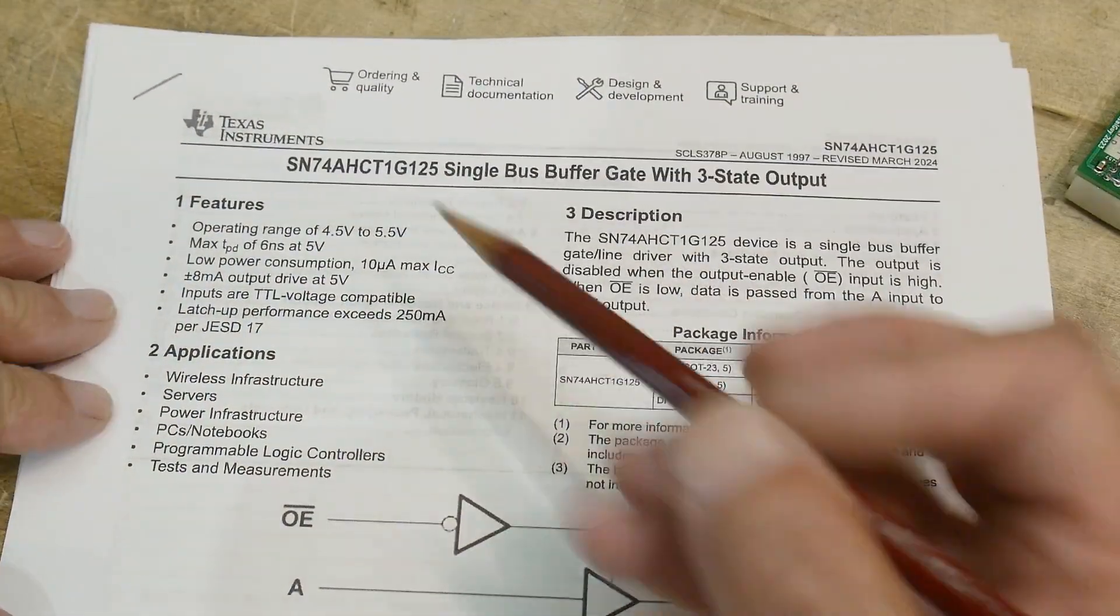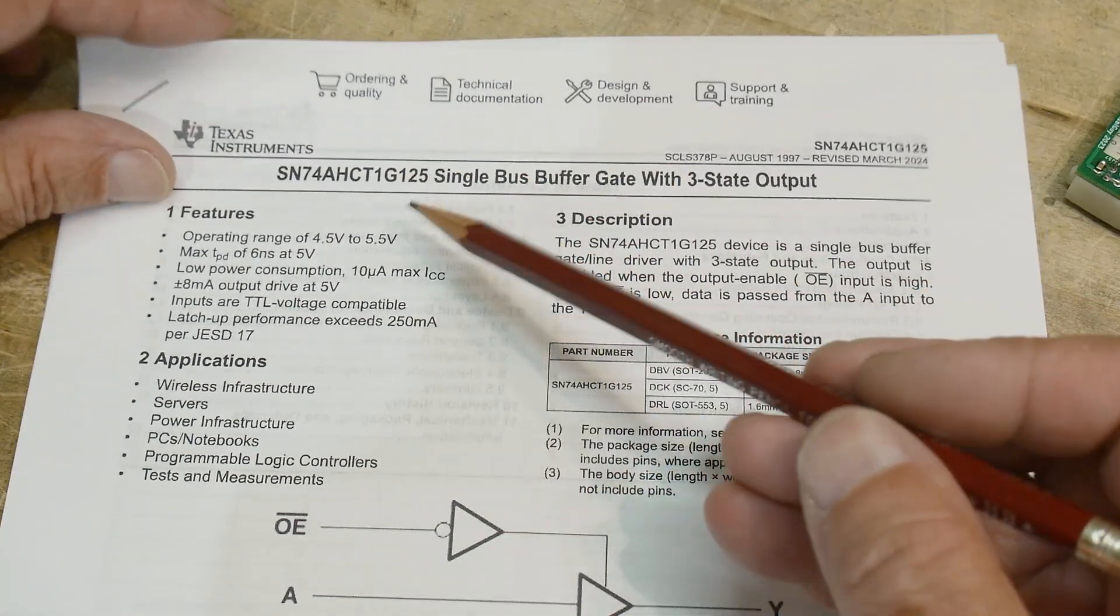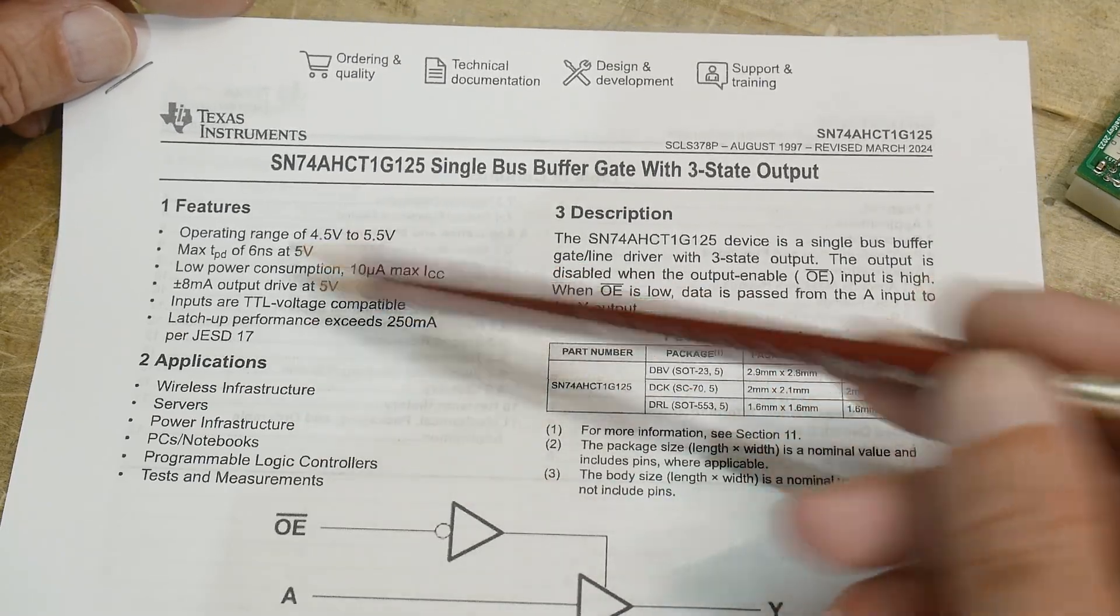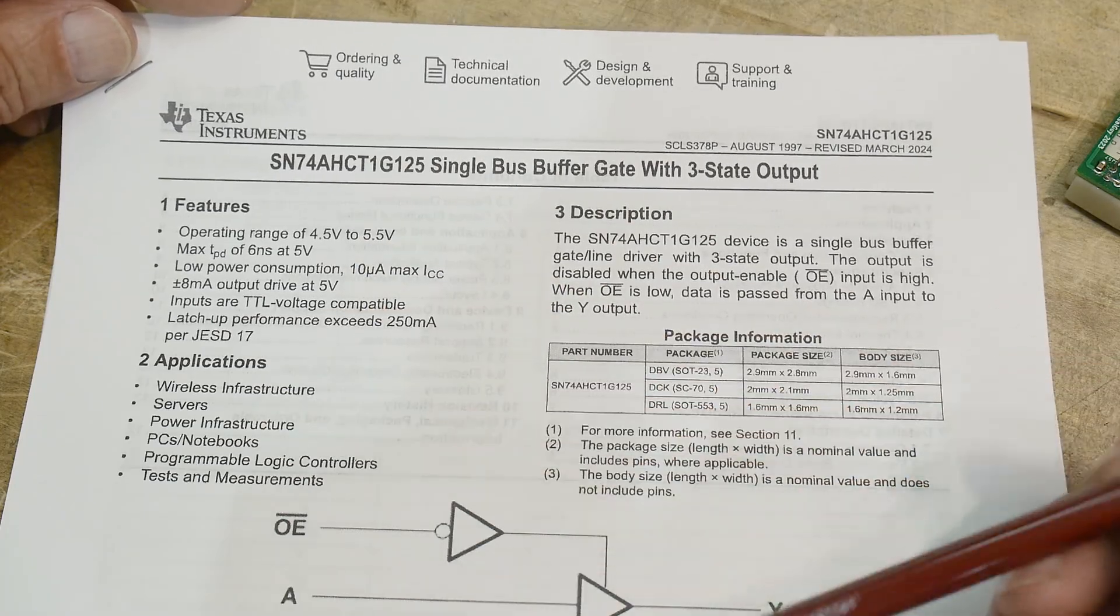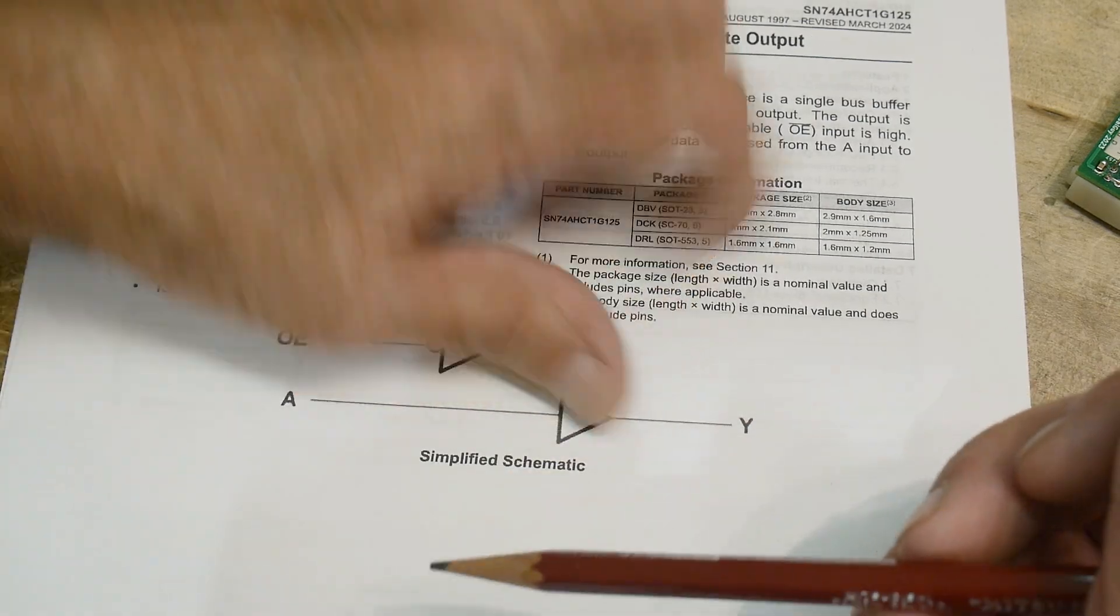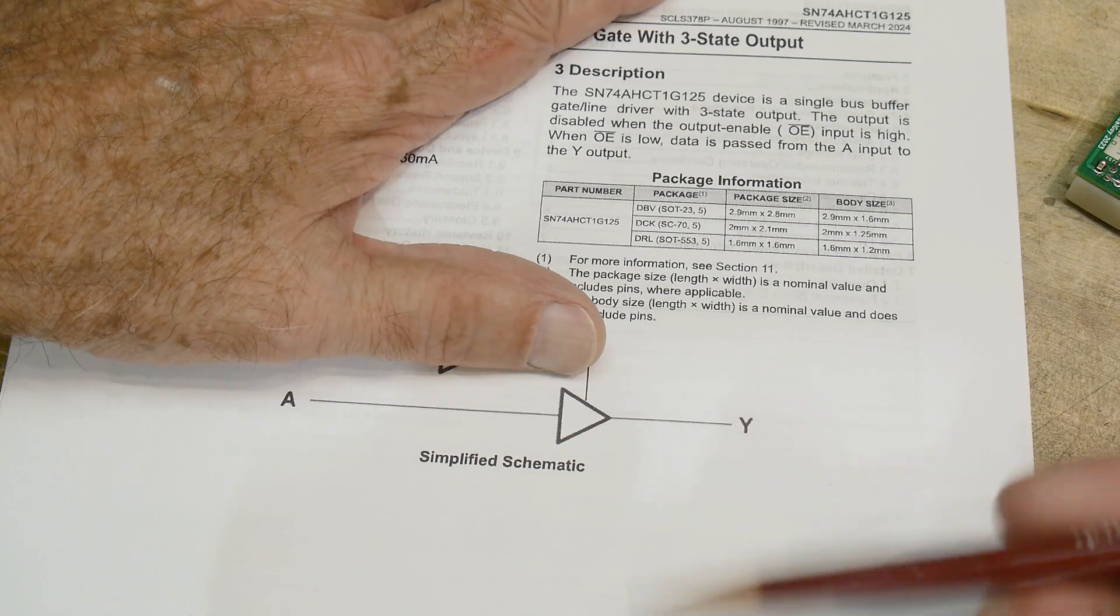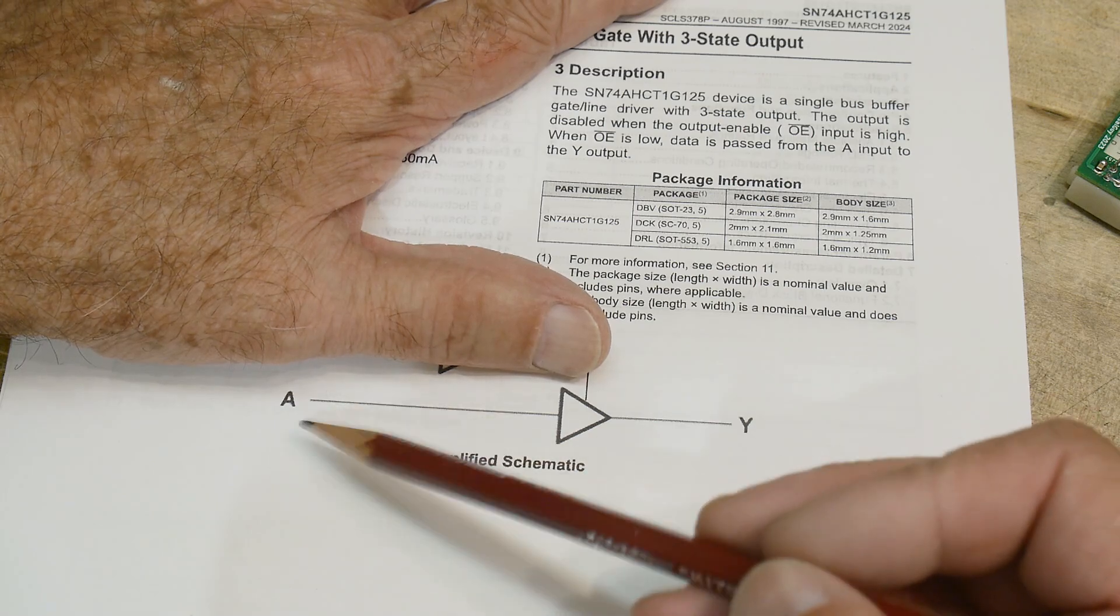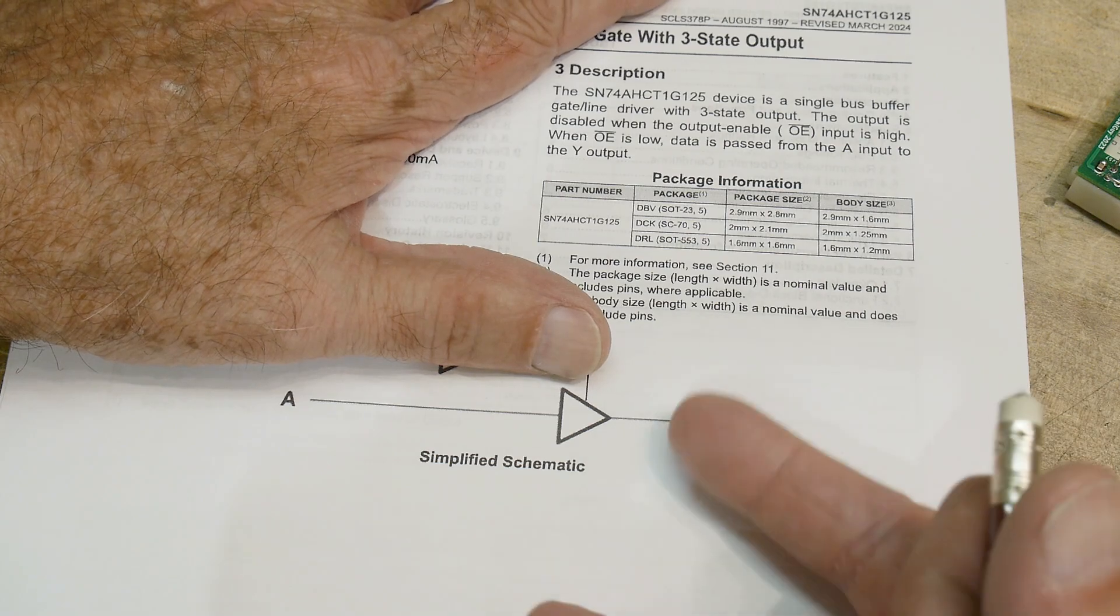So this one is a 74 AHCT one gate 125. This one will work four and a half to five and a half volts, six nanosecond propagation times. If people aren't familiar with what a tri-state buffer is, if this wasn't here then it would just be a buffer. The input would equal the output. Why would you want a buffer? Well, maybe your device over here can only drive one milliamp and this thing can drive several milliamps, and you want to buffer it.